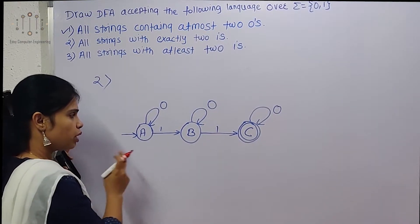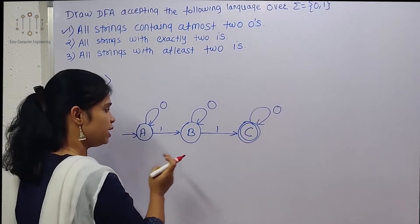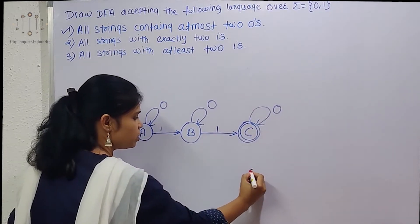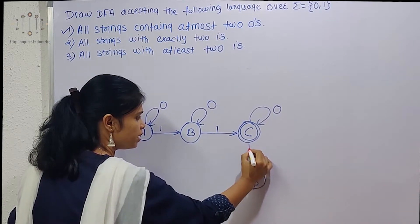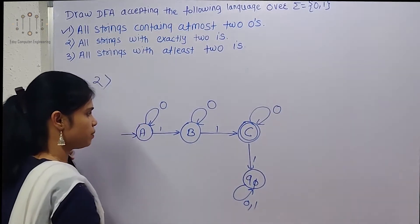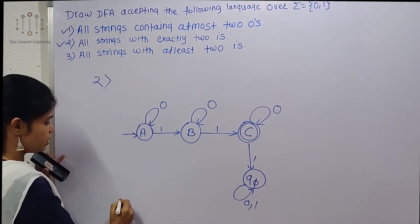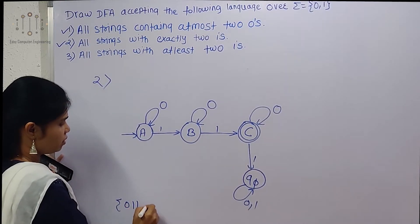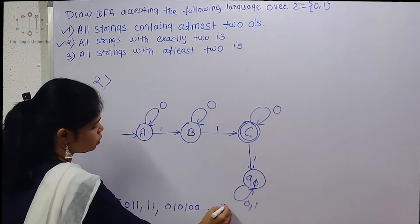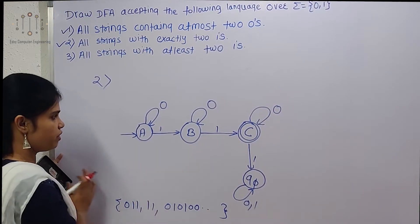There is no restriction on 0, so we apply 0 self-loops on every state. For the 1 transition from C, we cannot take any further 1 transitions because we want exactly two 1s. So we take one dead state and show that 1 transition going to it. This completes the DFA for exactly two 1s. Strings like '11', '101', '0110' are all accepted.